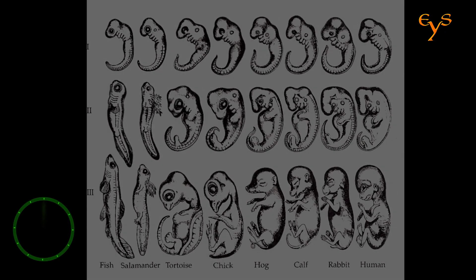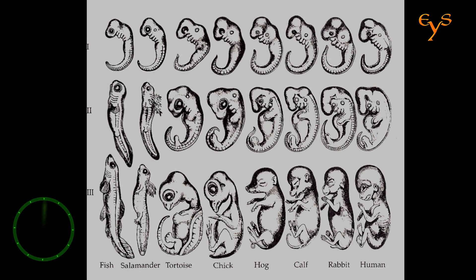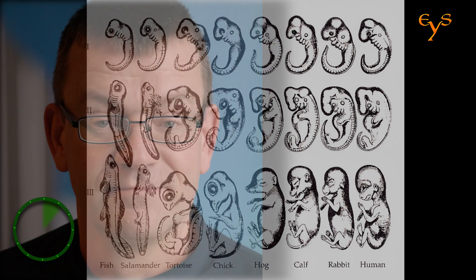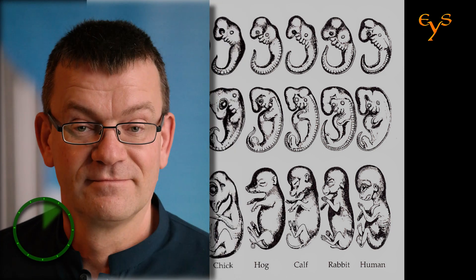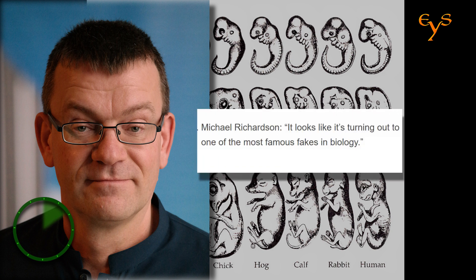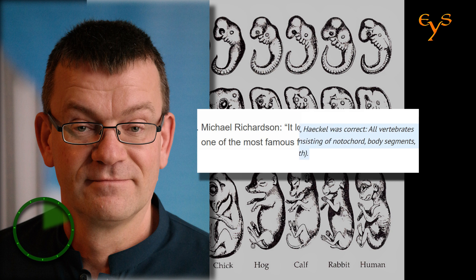This image is one of the most influential, outstanding, and at the same time controversial and disputed scientific illustrations. This is the most widely reproduced copy of a diagram illustrating a biogenetic or recapitulation rule, formulated by Ernst Haeckel. This image has been widely criticized for inaccuracy, so that Michael K. Richardson, professor of evolutionary developmental zoology at Leiden University, even said it looks like it's turning out to be one of the most famous fakes in biology. But after careful analysis, he concluded that on a fundamental level Haeckel was correct, therefore acknowledging the validity of the diagram.